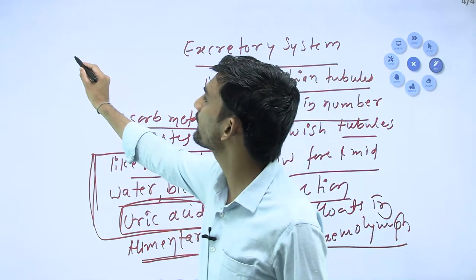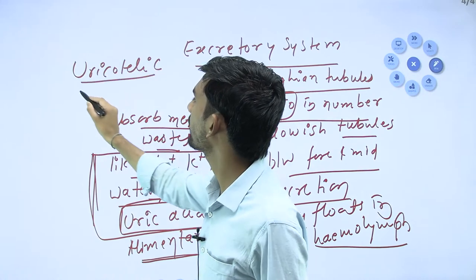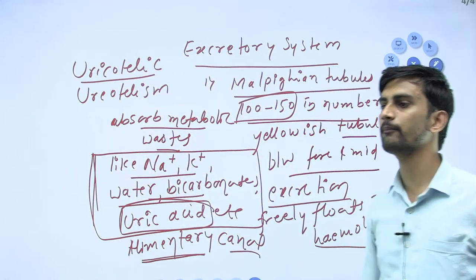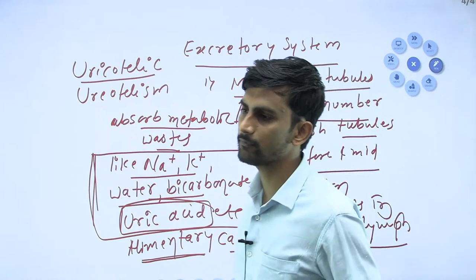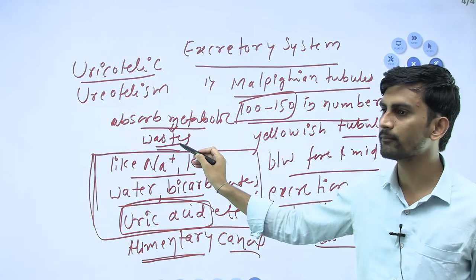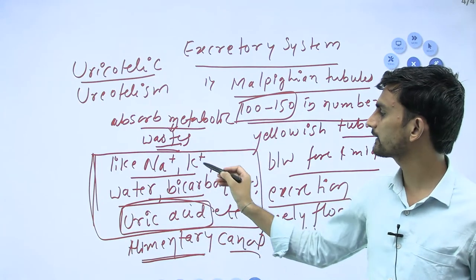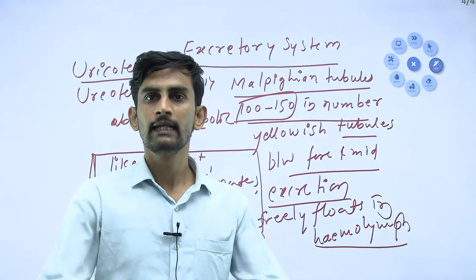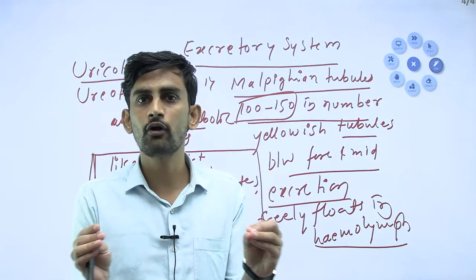Since cockroaches excrete waste as uric acid, such animals are called uricotelic, and the mechanism is called uricotelism. Cockroaches and arthropods are uricotelic animals. The absorbed uric acid along with extra water, bicarbonates, sodium, and potassium reaches the alimentary canal and is expelled out of the body through the anus.